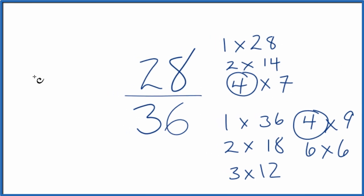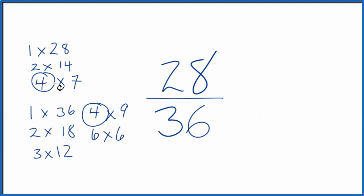Let's move these over here. So 28 divided by 4 equals 7, and then 36 divided by 4 equals 9, and we end up with 7 ninths. So we've simplified 28 over 36 down to 7 ninths and we can't reduce or simplify this any further.